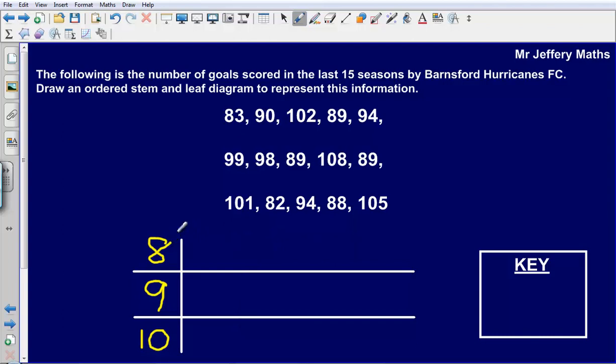It tells us as well, and this is quite an important thing to recognize, it says that it needs to be an ordered stem and leaf diagram. So what that means is that we are going to need to put these in order in terms of size.